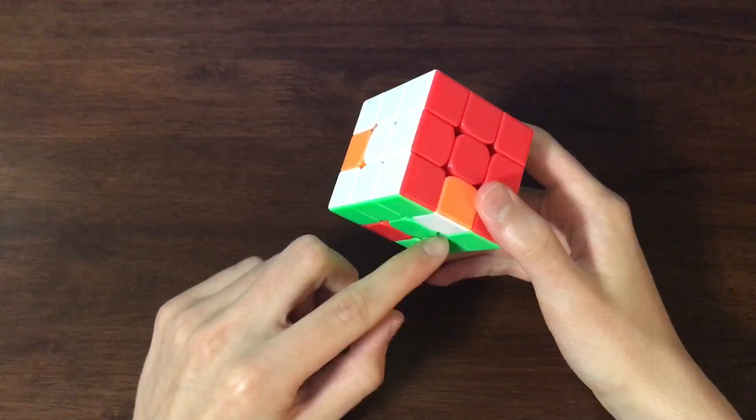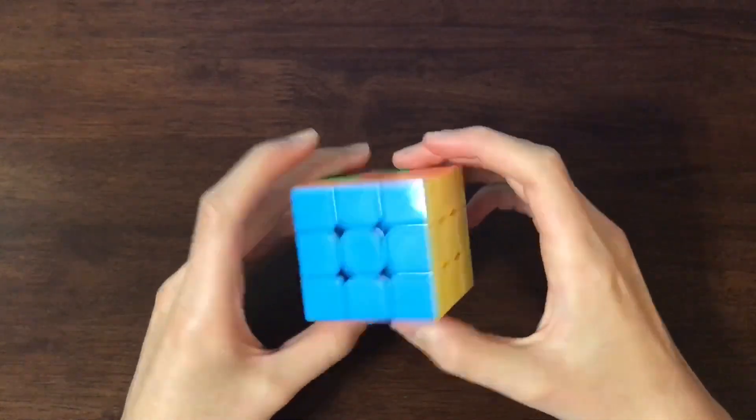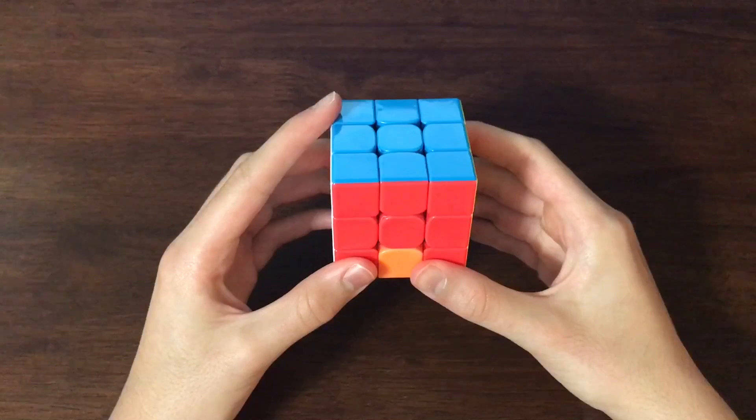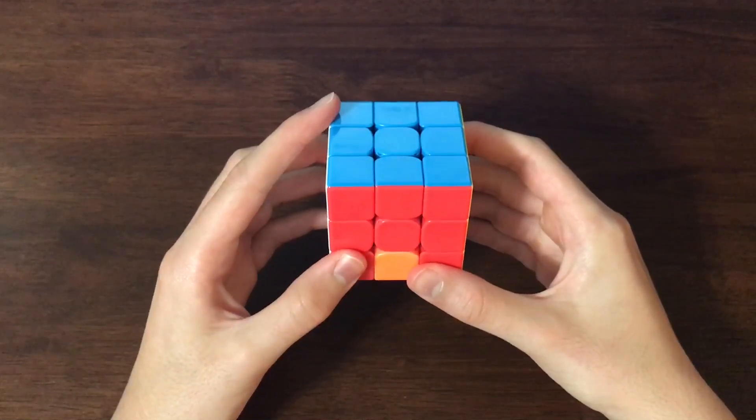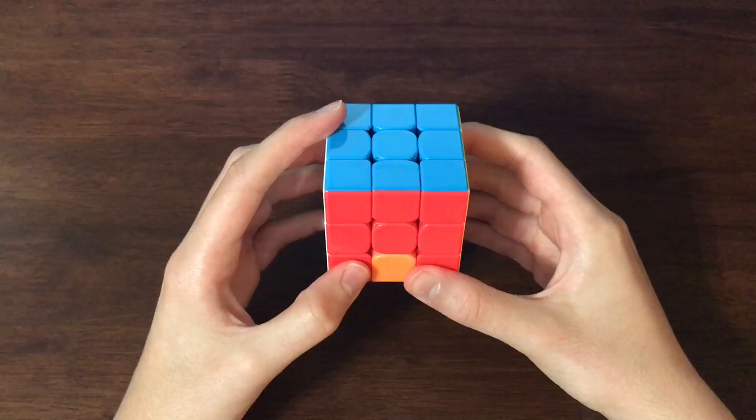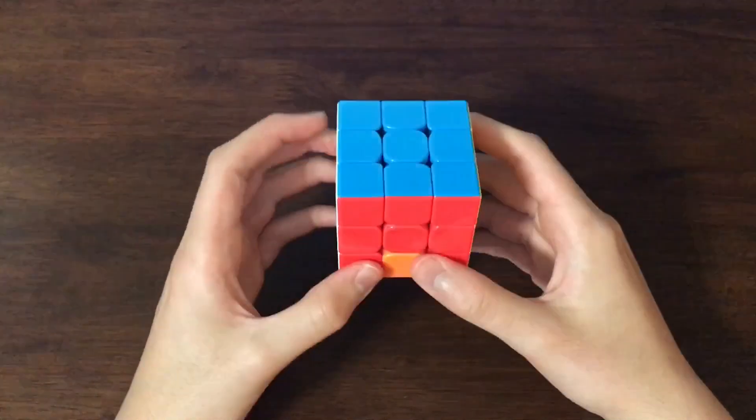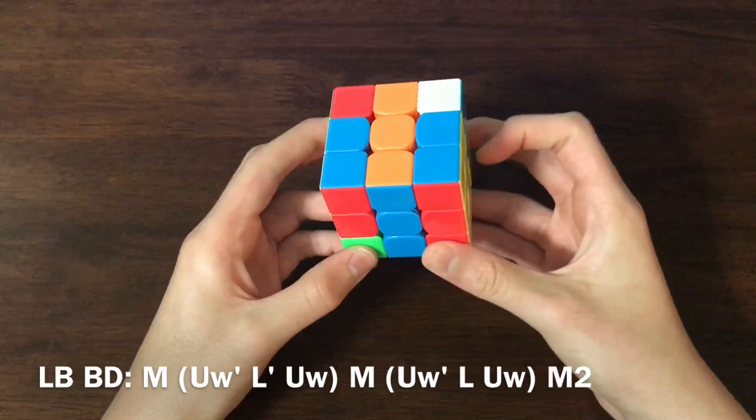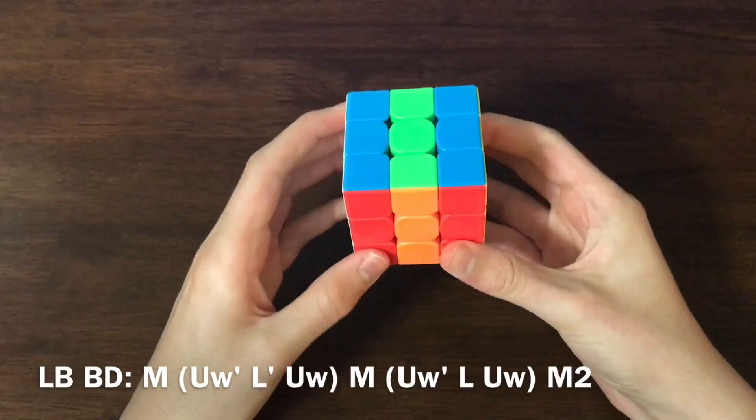The next case I have here is LB, BD, or HS in Speffz. And the pattern for BD as your second target goes M, setup move, M, undo setup move, M2. So, we have BD as our second target, so M, setup move, M, undo setup move, M2.